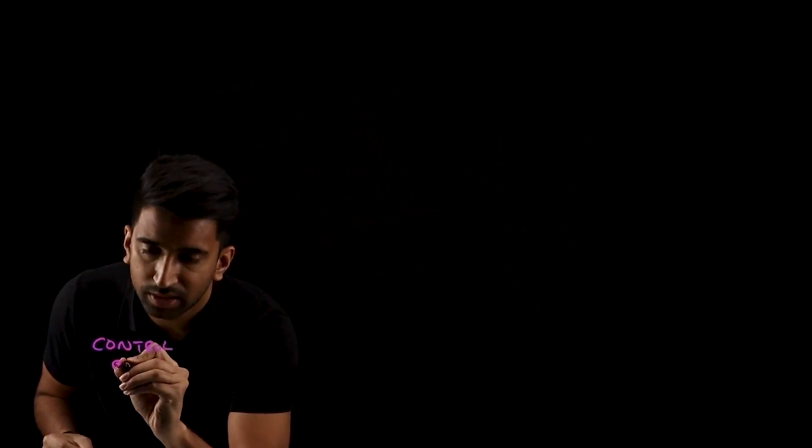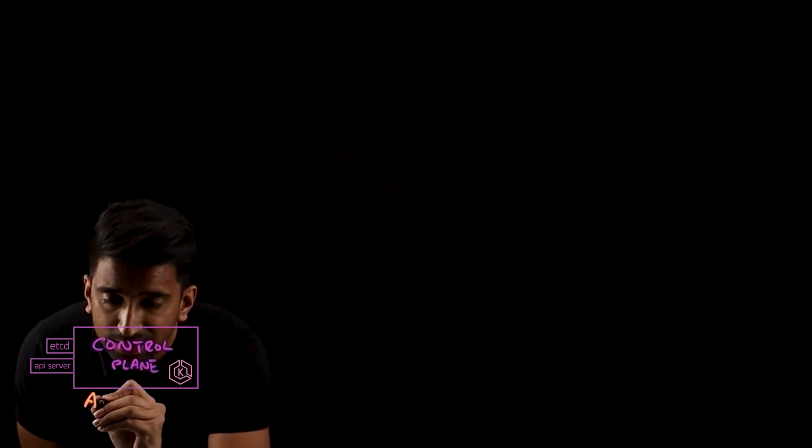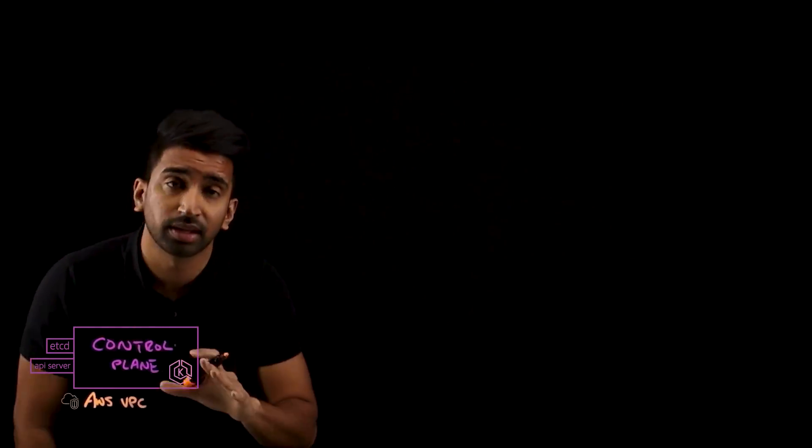I'll sketch that out over here. Today we're going to keep it simple. We're just going to call it control plane, but just know that this includes a number of components, kube components, etcd, the API server. Essentially, it's handling communication between you as an operator, the cloud service provider itself, AWS, as well as the data plane or worker nodes, which is where your containers actually live. Now, the critical piece about the control plane is that it's running in an AWS VPC, not a customer-controlled VPC. So AWS is going to handle things like the backups and the scaling and the patching and the upgrades of this environment.